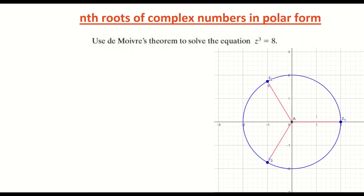Before we get into actually solving this equation, I've put up a diagram of the answers. Because the question involves z to the power of 3, there are going to be 3 solutions or 3 roots. You can see on the diagram that we have 3 roots — I've called them z1, z2, and z3. When you're finding z to the power of 3, there are going to be 3 answers or 3 roots.